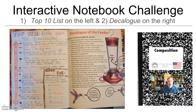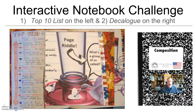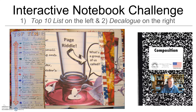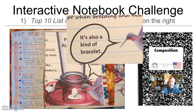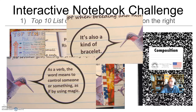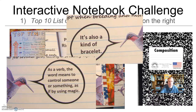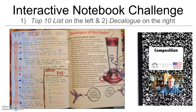This is the interactive notebook challenge for the week: a top 10 list with a decalogue. I did have an interactive element on the page — a page riddle. What's a group of hummingbirds called? There is a fancy name for it. I put two clues on my page: it's also a kind of bracelet, and as a verb it means a certain thing. If you type 'what is a group of hummingbirds called' into Google, you'll have the answer. But I put it as a page riddle.